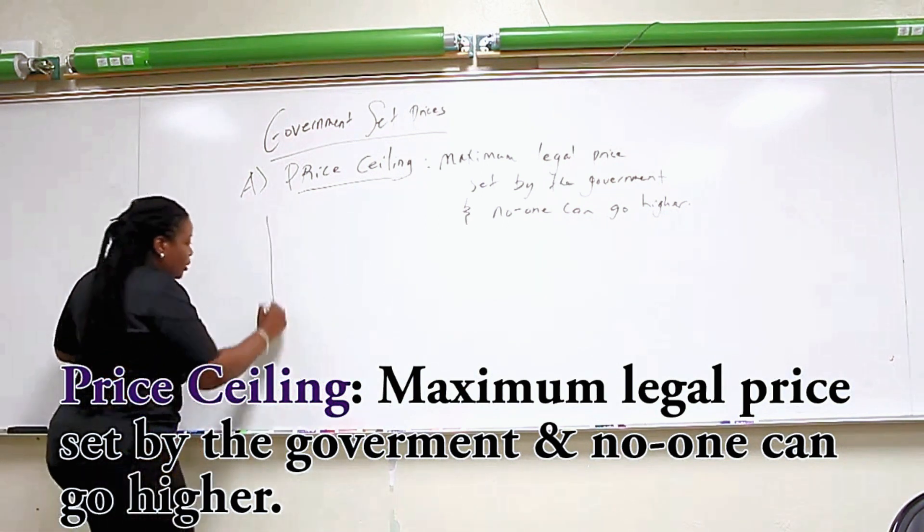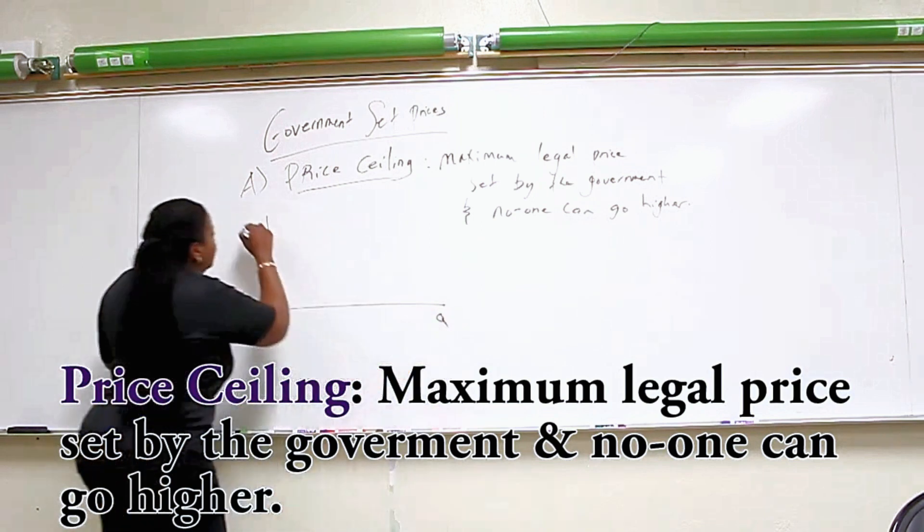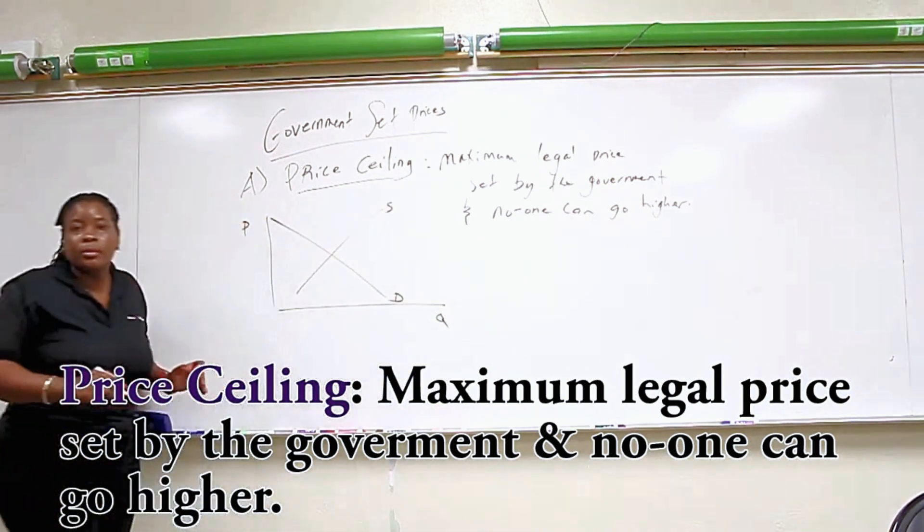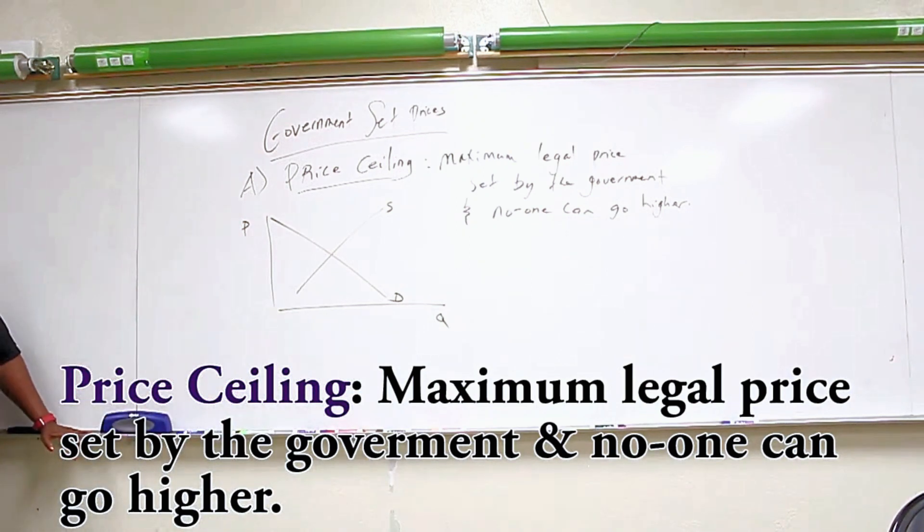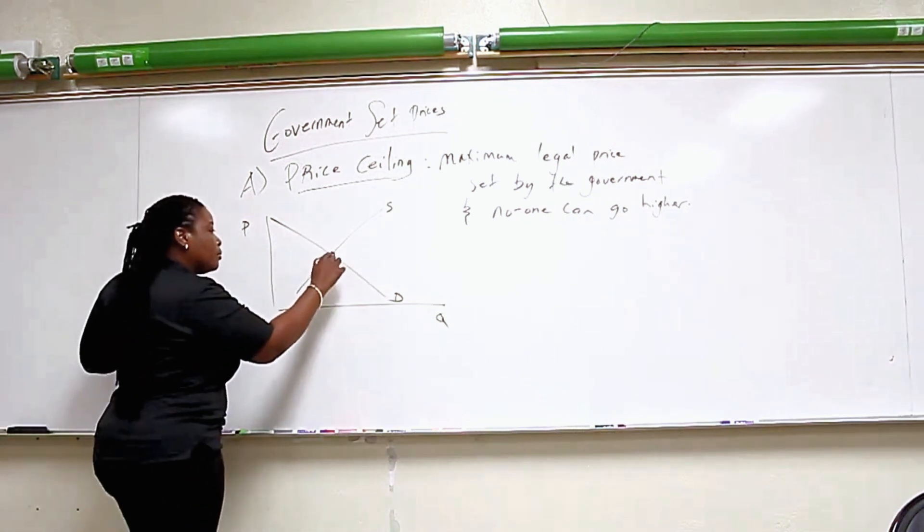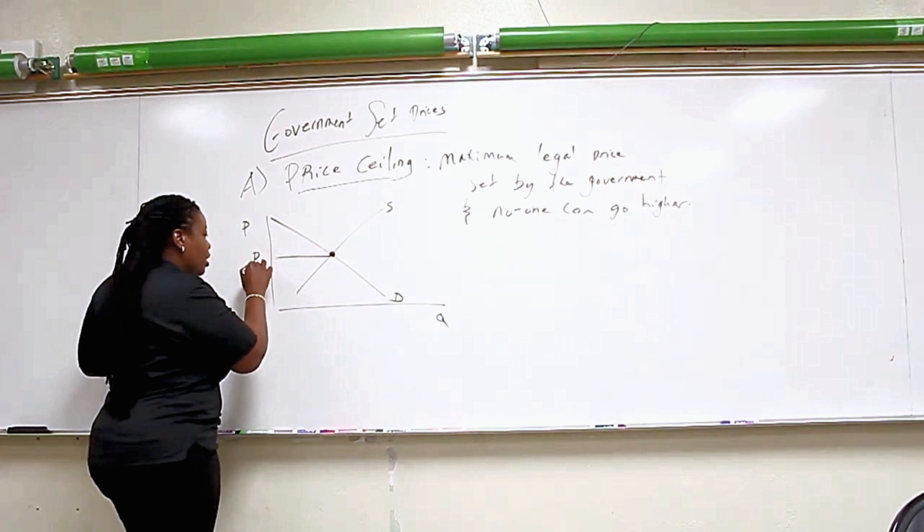Let me show you what's going on. There is our market. The maximum legal price set by the government and no one can go higher. That's the general idea. What's happening with the price ceiling is here's our market. This is our equilibrium. Let's label it P star.